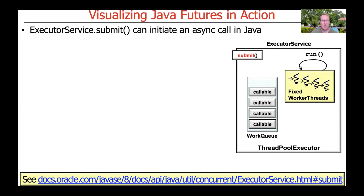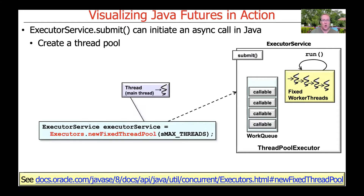One way to do this is by using the submit method on the executor service. ExecutorService is a part of the executor framework in Java, and it can be used to initiate asynchronous calls. What happens when you use the executor service is you first create some kind of thread pool. In this particular case, we're going to make a new fixed-size thread pool with a certain number of threads — let's say four threads, just to be concrete.